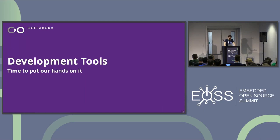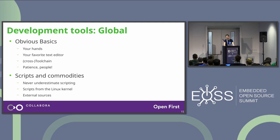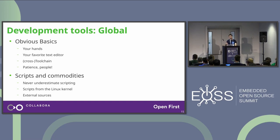Let's go for development tools. Obviously you need your hands, a text editor, a cross-toolchain unless you're building ARM64 on ARM64, and a lot of patience — not just because you have to wait for things to build, but because of the many issues you'll have later. You should never underestimate scripts and commodities that will help you through your development journey. If you care about building your development environment and making yourself comfortable, that will save you a lot of time.